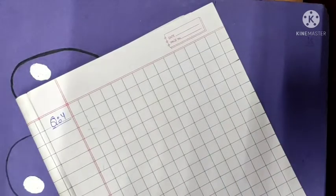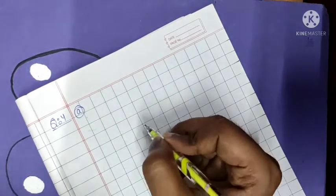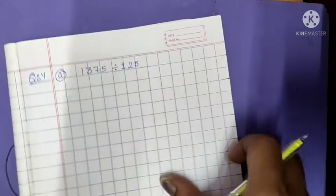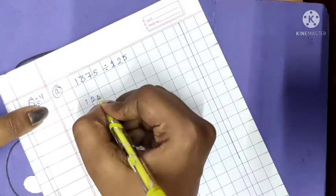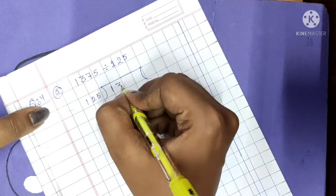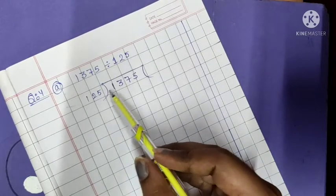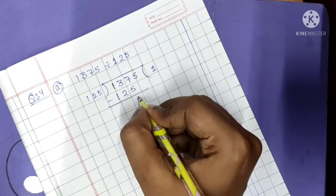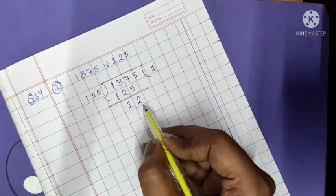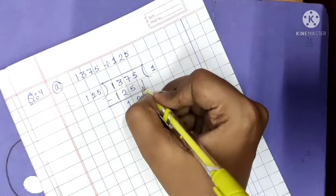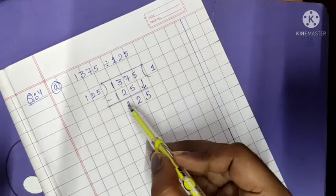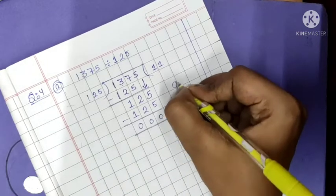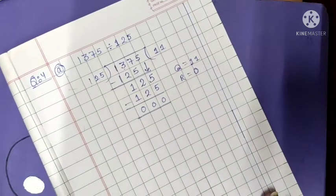Now come to question number 4, A part. 1375 divided by 125. Draw the rough work also. Now arrange the digits. 12 ones are 12, is possible. So we will write 125 ones are 125 here. 7 minus 5 is 2 and 3 minus 2 is 1. So is this number possible? No. So we will copy 5 here. Okay. Now the same number has come. 125 ones are 125. So it will become 0. Quotient equals 11 and remainder equals 0.